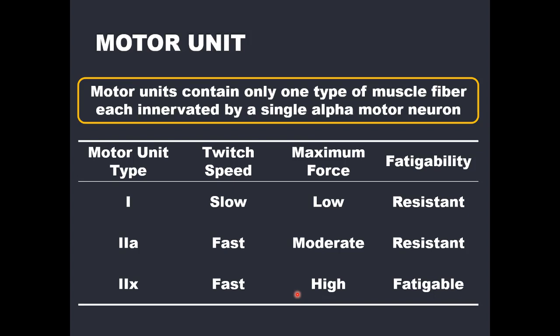On the other hand, elite endurance athletes show a very heavy type 1 percentage across their musculature, which contributes heavily to their athletic capacities. This fiber type distribution is largely determined by genetics. Genetic potential is a very real thing — there are individuals who have a high type 1 or type 2 distribution but never realize that potential, oftentimes because they don't have any interest in sports.